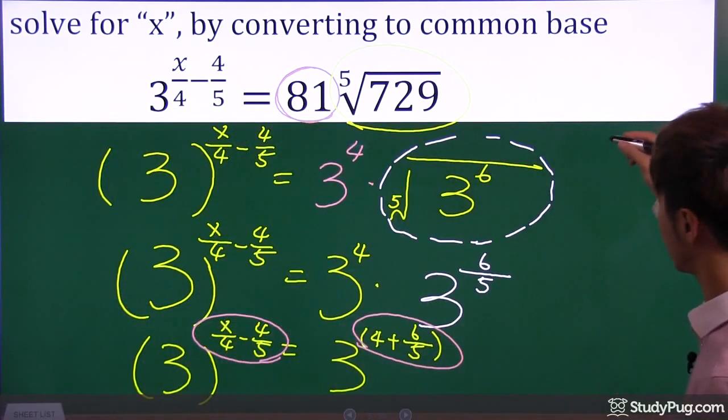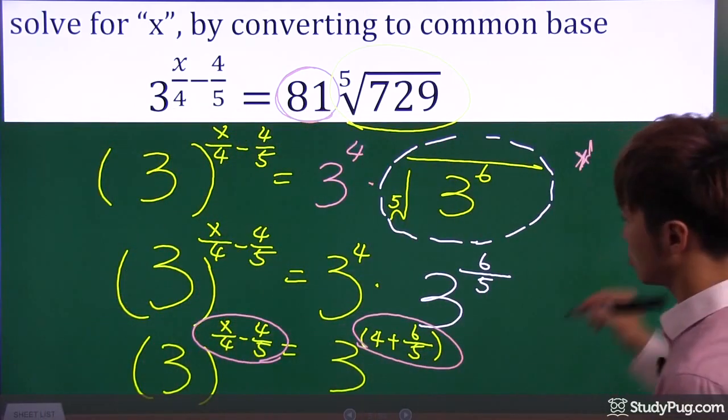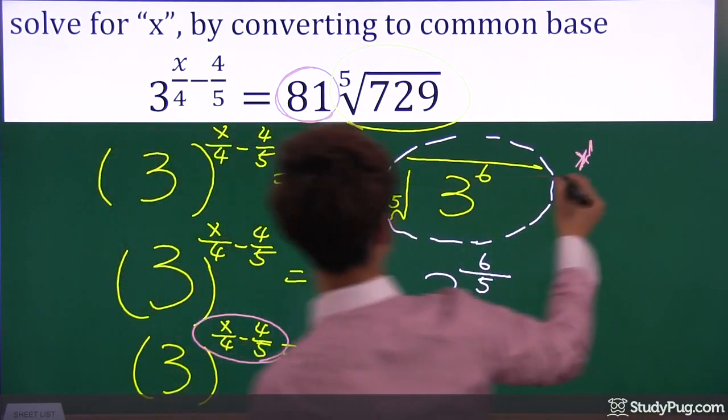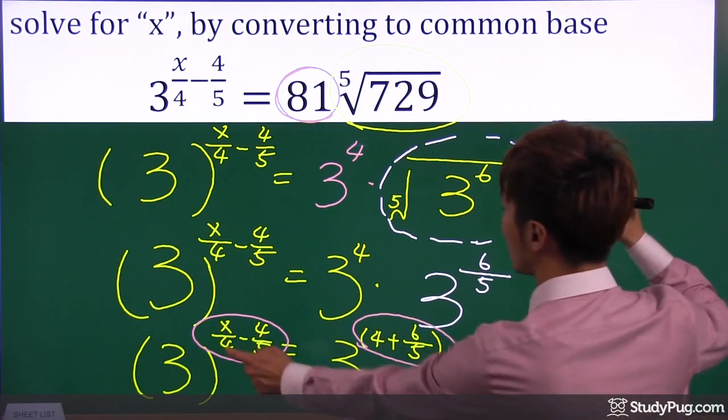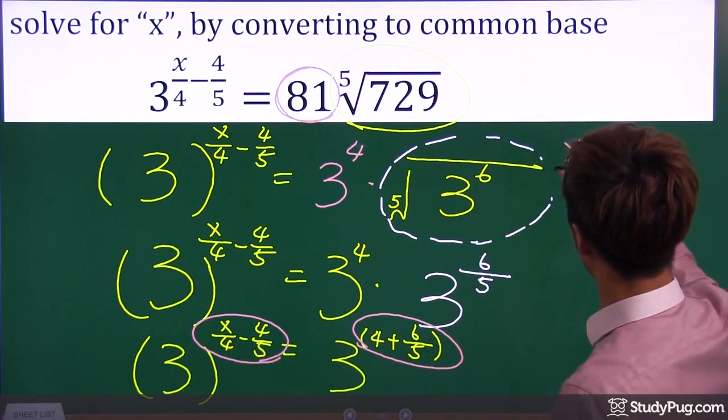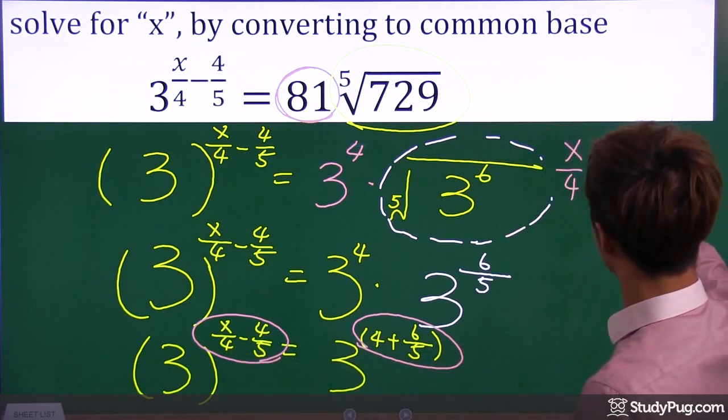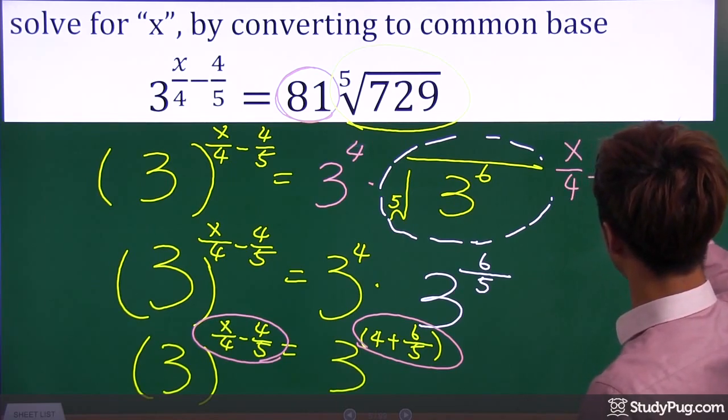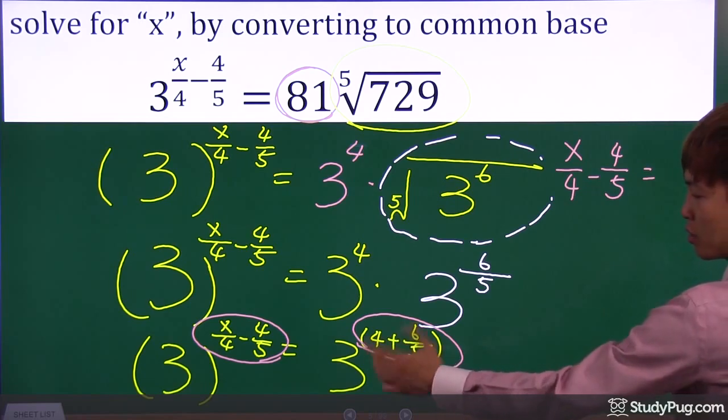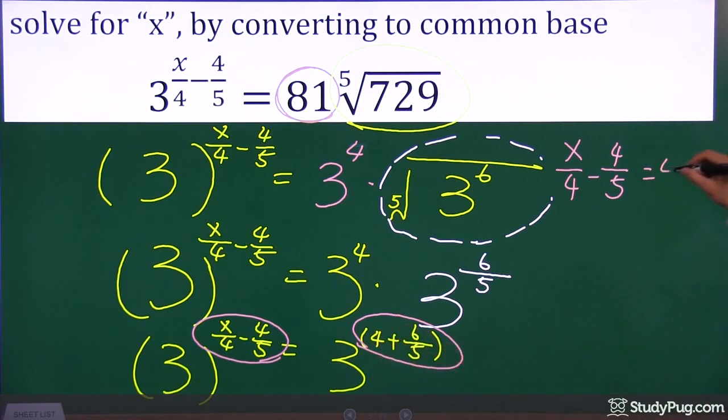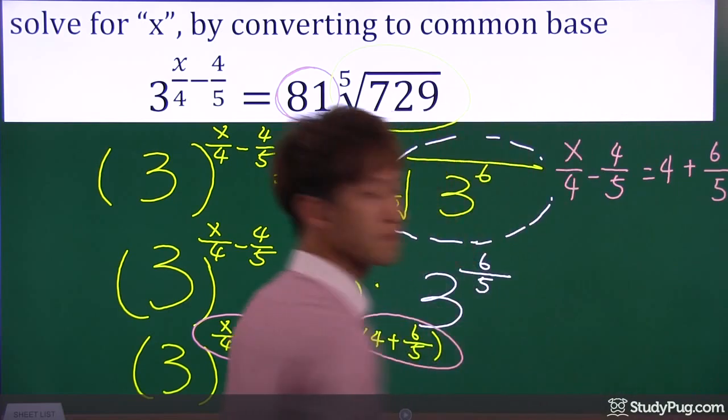So now, we know that the exponent on the left, which is x over four minus four over five, must equal the exponent on the right side, which is four plus six over five.